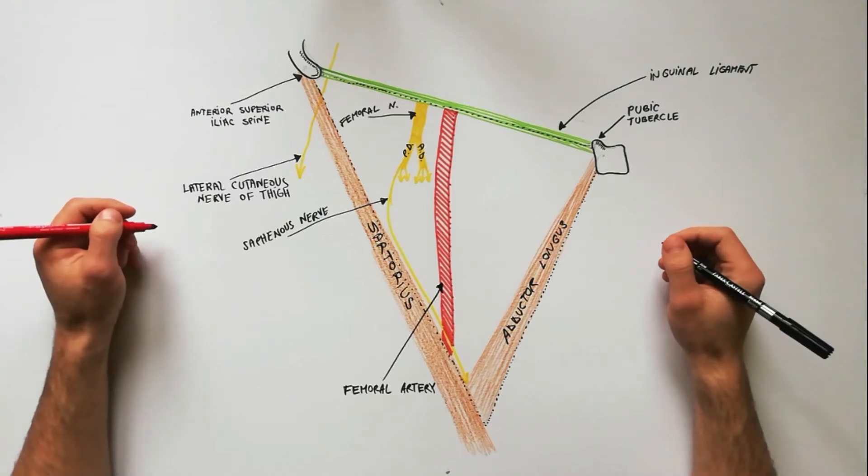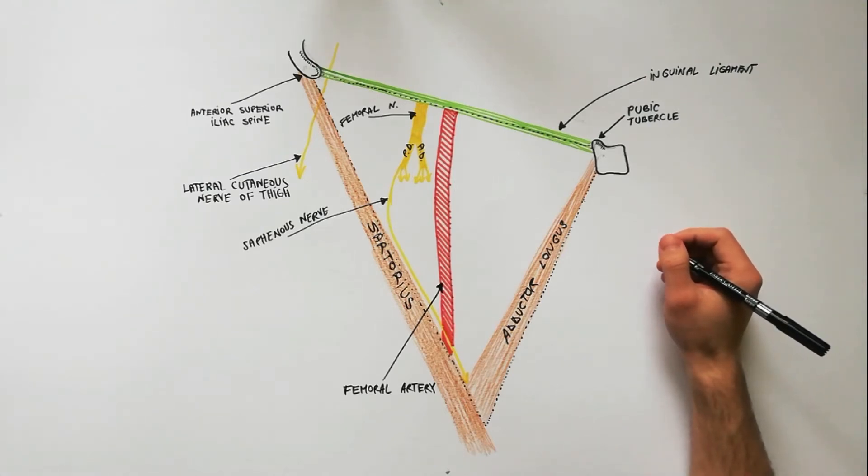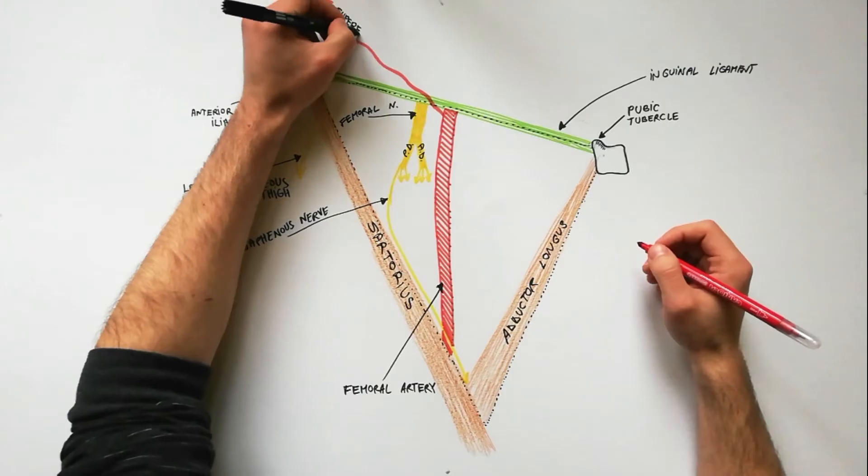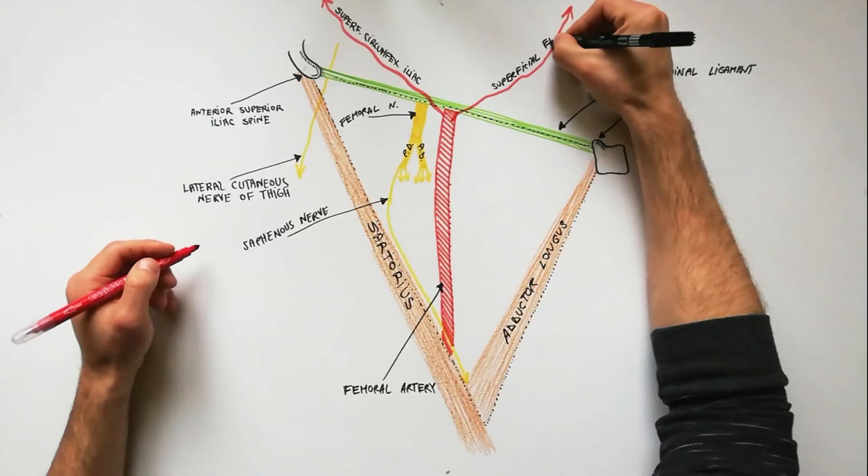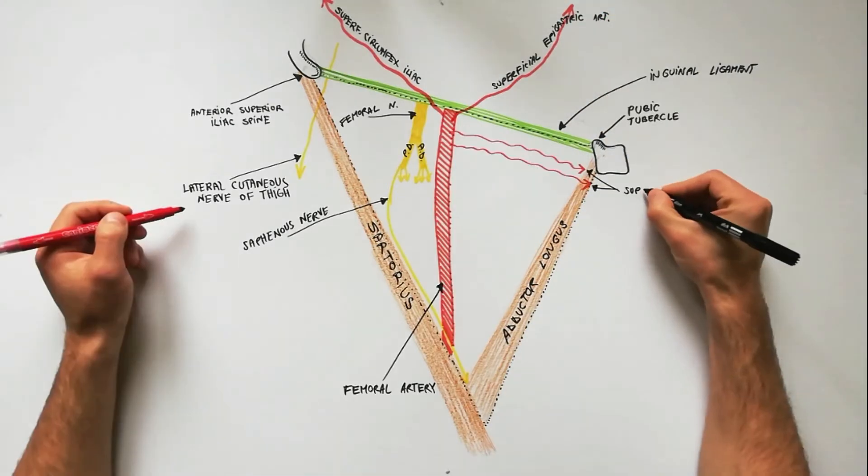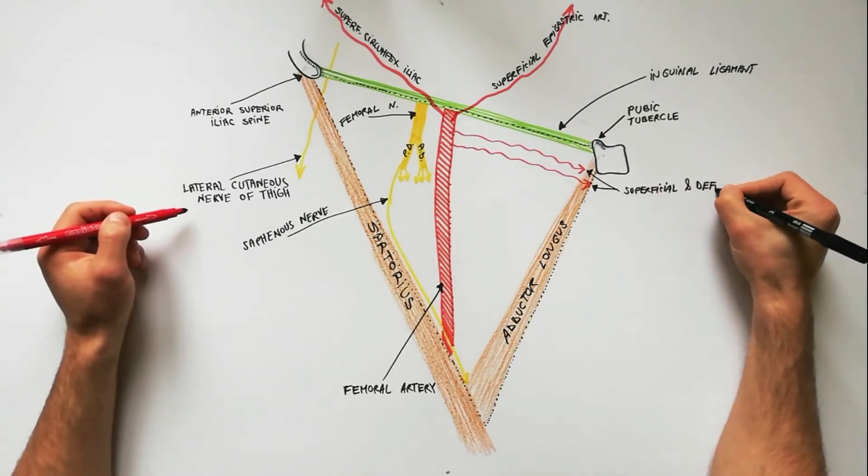Arising from the upper part of the femoral artery, we have the superficial circumflex iliac artery, the superficial epigastric artery, and superficial and deep external pudendal arteries.